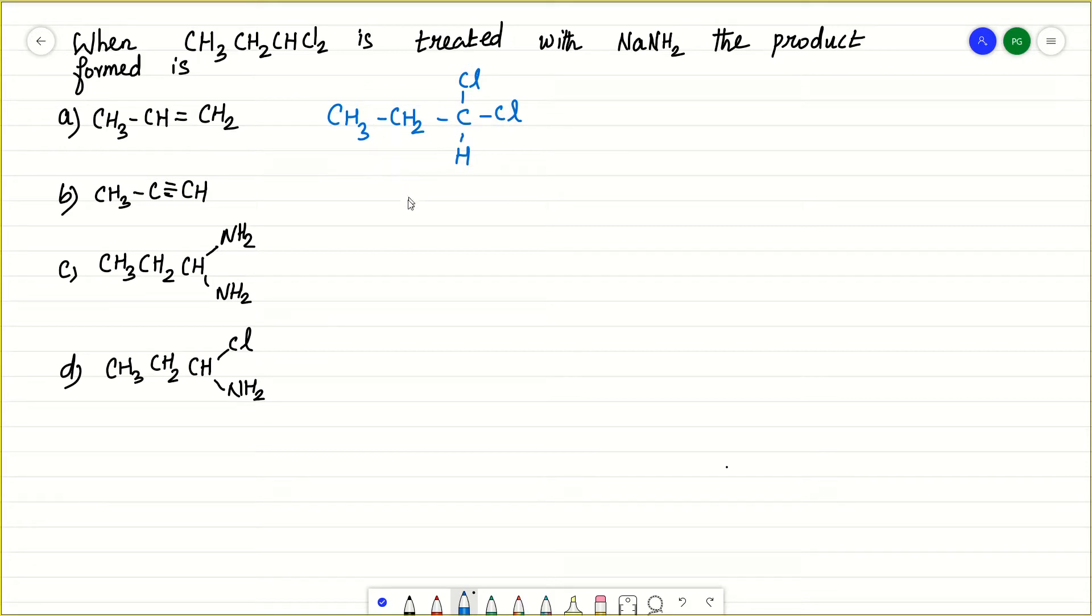1,2,3, that is propane, and in the first position 1,1-dichloro. So this is 1,1-dichloropropane is treated with NaNH2.